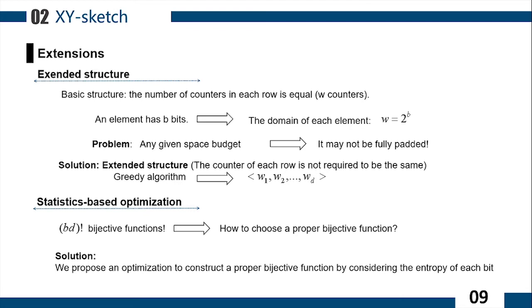Then, we sort the entropy of each bit. We set W1 bits with the highest entropy as the first basic element of an item. The following W2 bits with the highest entropy are set as the second basic element. In this way, we allocate all bits properly and construct the final bijective function. The reason why we take this strategy is written in the paper and we will not share it in detail because of time limitations.